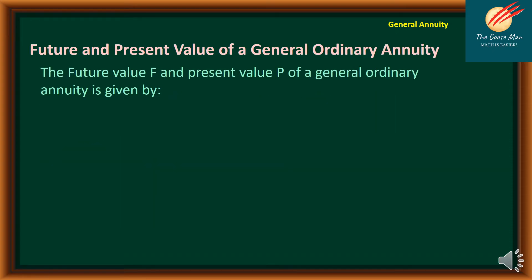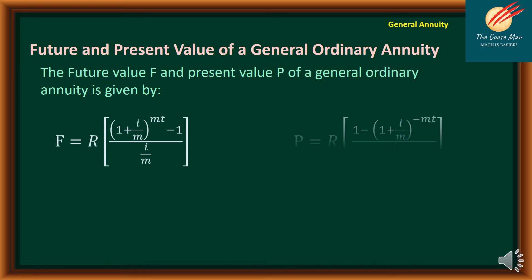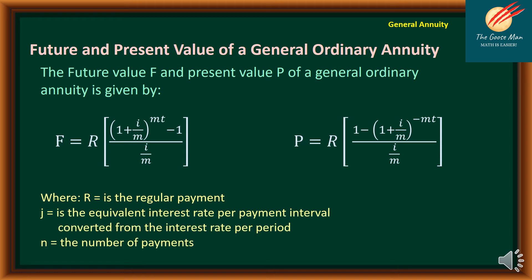Here is the formula for the future value and present value of a general ordinary annuity. R is the regular payment, J is the equivalent interest rate per payment interval converted from the interest rate per period, and N is the number of payments. Note that J equals I over M, where I is the interest per year and M is the number of conversions per year. N is the total number of payments, equal to M times T.